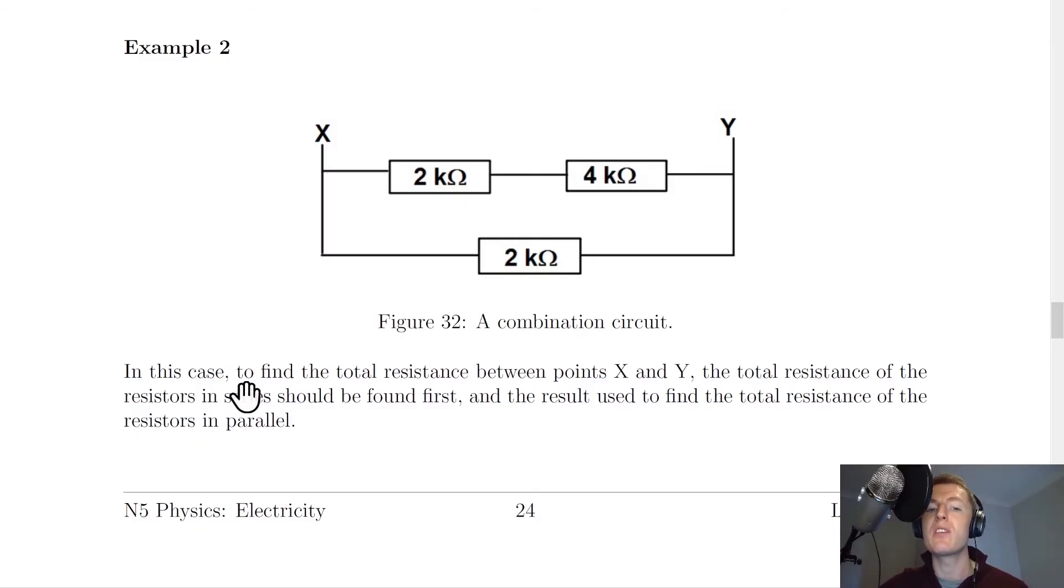Then what we would have to do now is to find the total resistance between points X and Y. The total resistance of the resistors in series should be found first, i.e. this one, and then the result used to find the total resistance of the resistors in parallel.